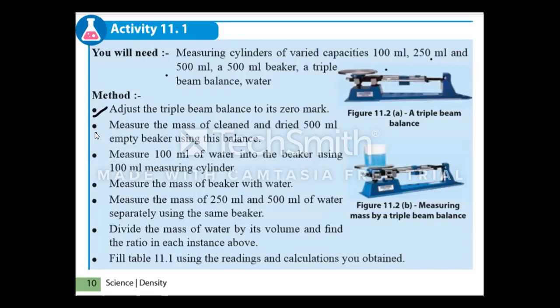The second step is to measure the mass of the cleaned and dried 500 millilitre beaker using this balance. Once we measure the mass of the empty beaker, we fill it up with water. First we measure 100 millilitres of water from a measuring cylinder, fill the beaker with water, and measure the mass of the beaker with water. Then we measure the mass of 250 millilitres and 500 millilitres of water separately using the same beaker. Finally, we record all our readings in order to do some calculations.